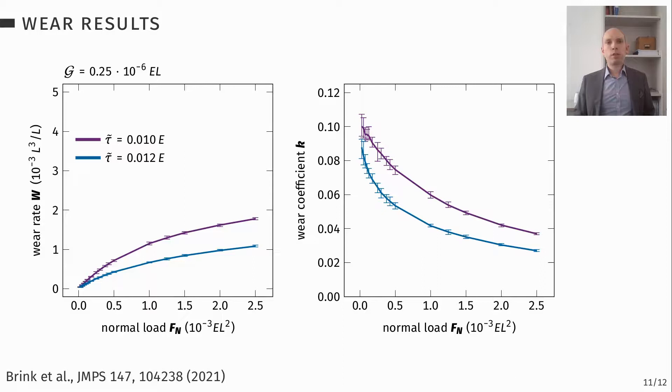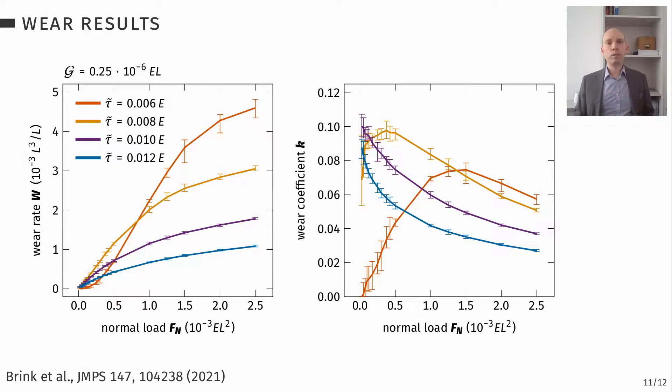Also, a feature of this model is if we reduce the hardness or here it is expressed in terms of the shear strength of the material tau, but you can also convert that approximately into hardness. So if you decrease that hardness, you get more wear rate. Wear rate increases more and more the softer your material becomes. And the wear coefficients are not exactly equal, but they are in the same range, which is what you would expect from the formulation of Archard's wear law.